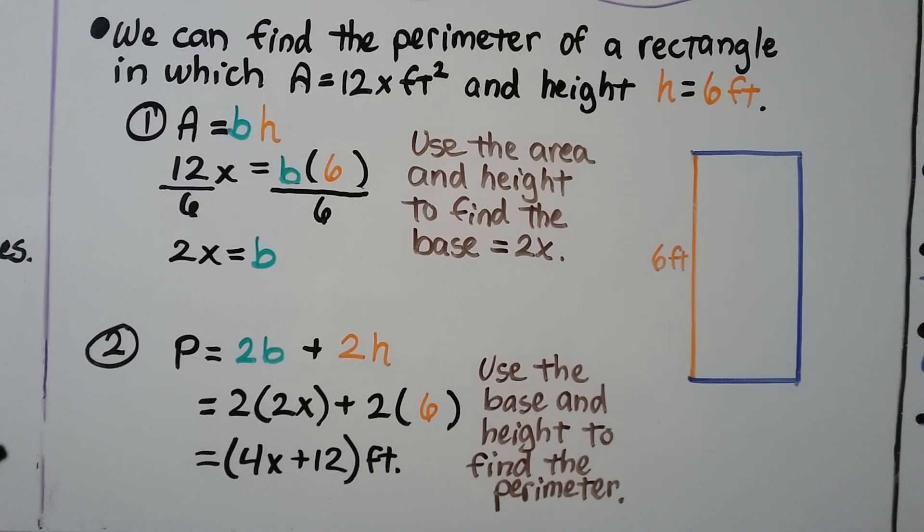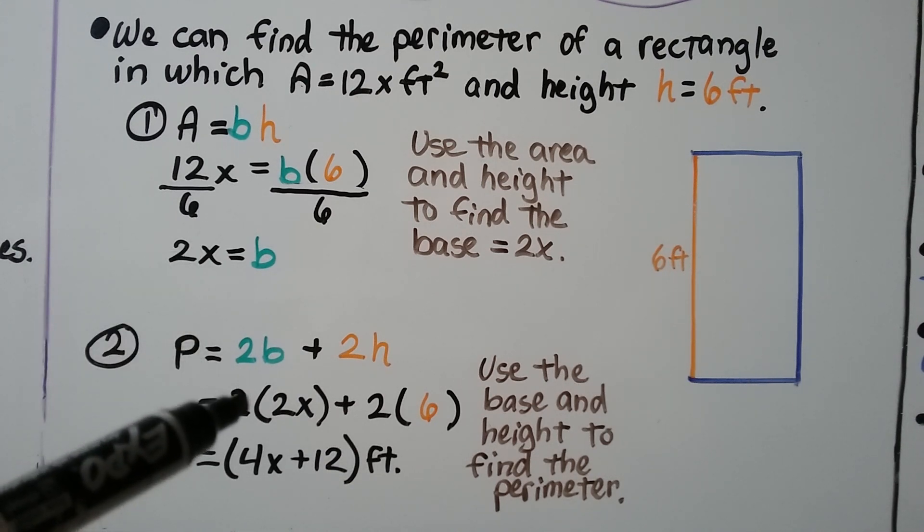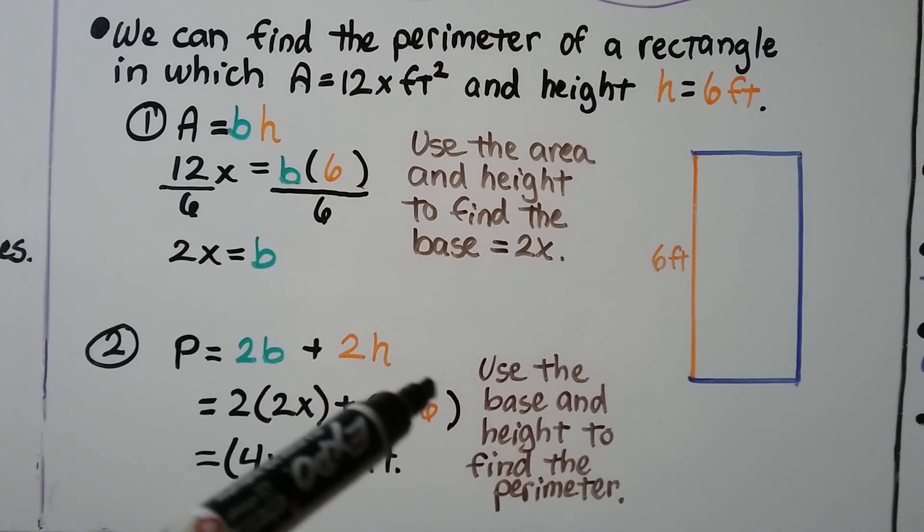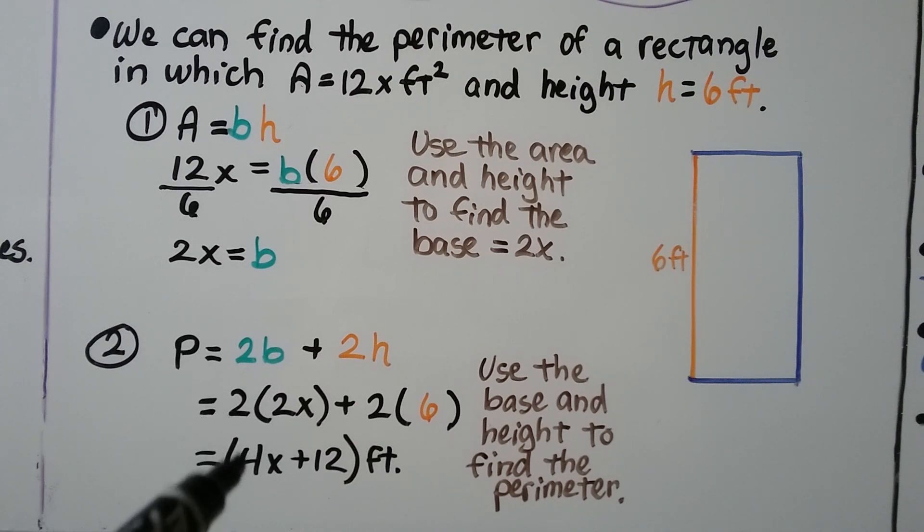Now we can use the base and height to find the perimeter. So our perimeter formula is p equals 2b plus 2h. We know b equals 2x, so we have 2 times 2x plus 2 times 6, that height. We distribute this and get 4x plus 12 feet for our perimeter.